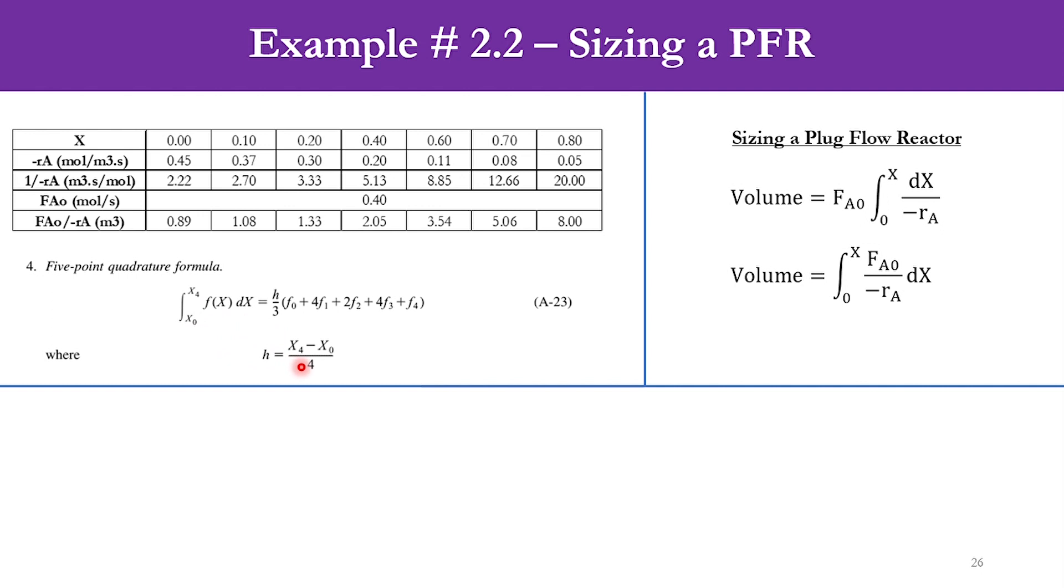Let's assume we need to find at point 0.8. This means we need five points in the system. F(x) represents FA0 over minus RA, so F0 is FA0 over minus RA at x = 0, F1 at point 1, F2 at point 2, F3 at point 3, and F4 at point 4. F4 and F0 correspond to the starting and ending points, where F0 is the lower limit at X0 = 0, while F4 corresponds to X4 = 0.8.